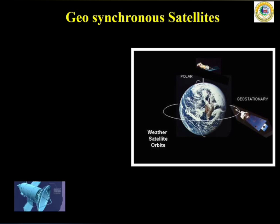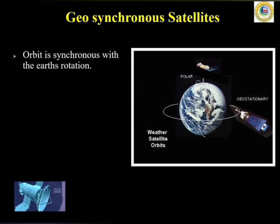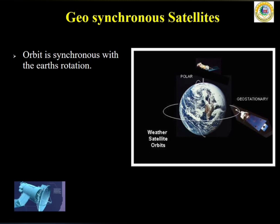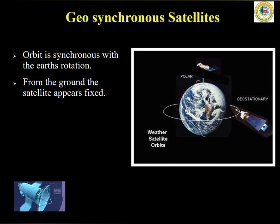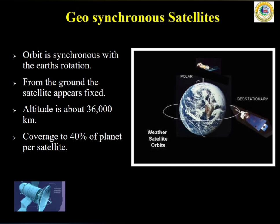Geosynchronous satellites: in the figure, you can see that the satellite is revolving around the earth in a geosynchronous manner. The orbit is synchronous with earth's rotation, and from the ground the satellite appears to be fixed. These types of orbits can be used for local observation. The altitude of such an orbit is 36,000 kilometers, and the coverage is nearly 40 percent of our planet.